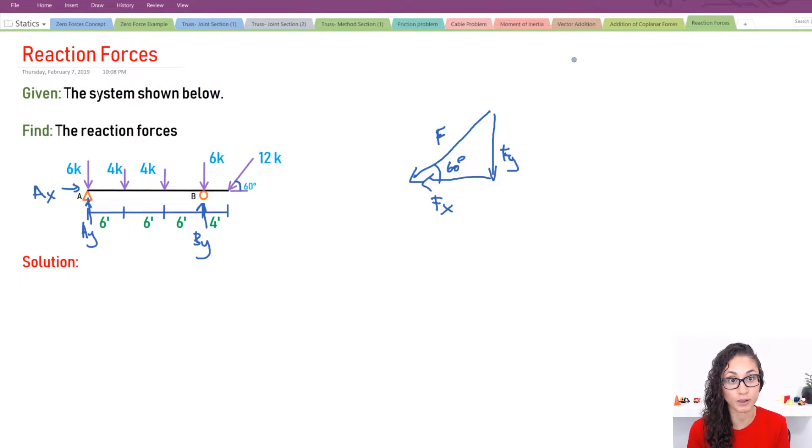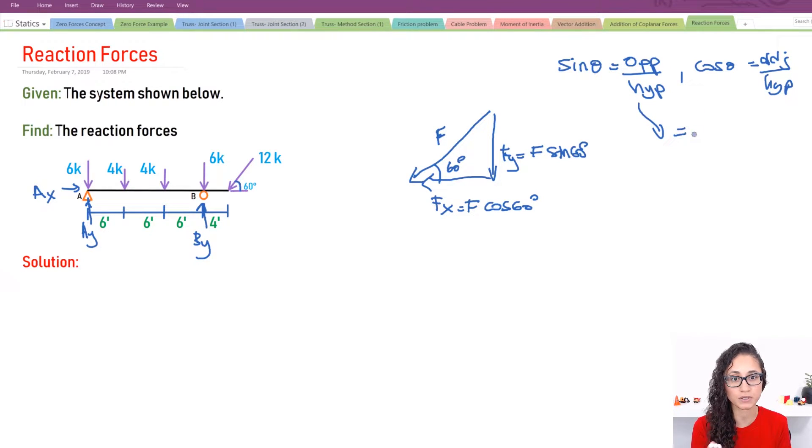So as you guys know, and as I mentioned in a lot of my previous videos, is that when you have sine theta, it's usually equal to the opposite over hypotenuse. And then cosine theta is equal to adjacent over hypotenuse. So here I'm going to have Fx is equal to F because it's adjacent, we're going to use cosine 60. And then here we're going to use sine because it's opposite.